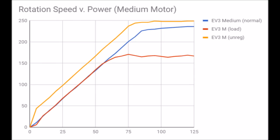In my second graph, I show the same exact tests performed on the medium motor. Again, we have the normal unloaded motor in blue, the loaded motor in red, and the unregulated motor in orange.